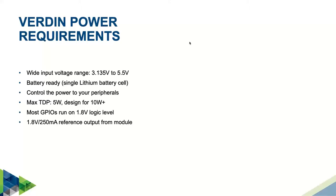To make things easier, the Verdin SoMs output a 1.8 volt, 250 milliamp reference voltage, which you can use to power peripherals on your carrier board without necessarily including a separate buck converter.